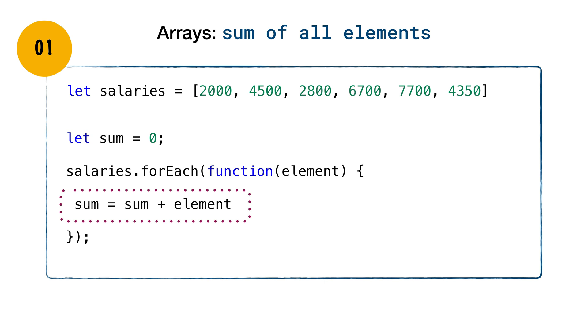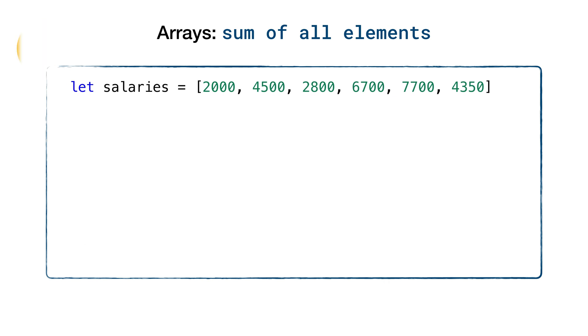Now the sum variable keeps accumulating the total count and once all the elements are traversed, the final value will be 28,050, which is the sum of all the elements.